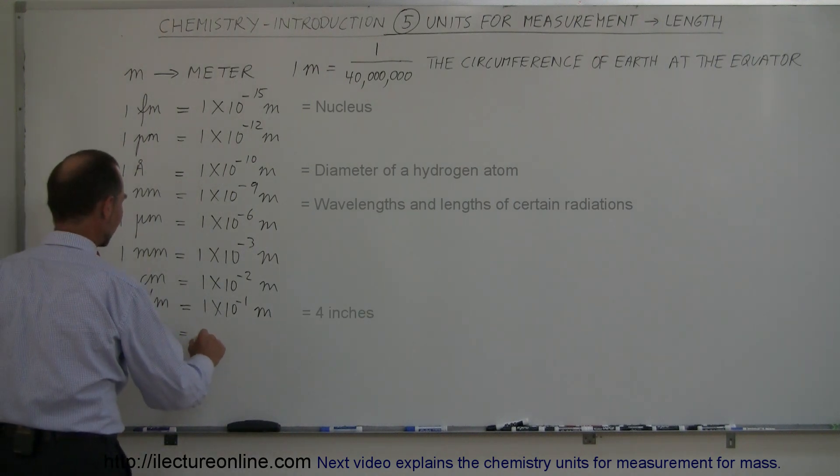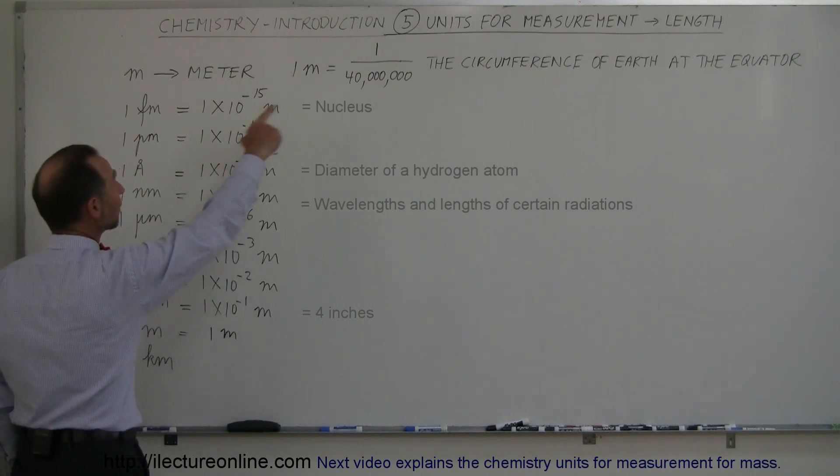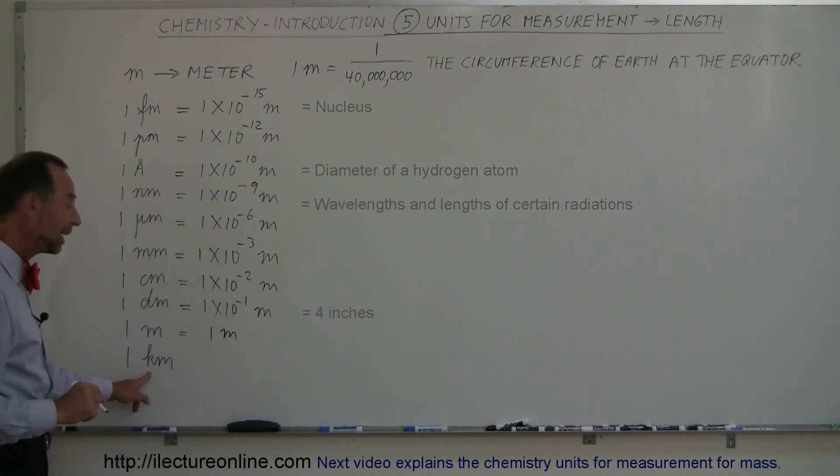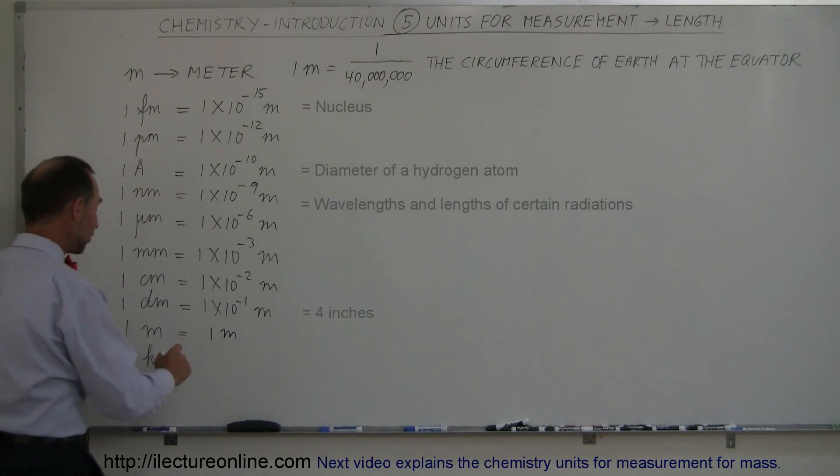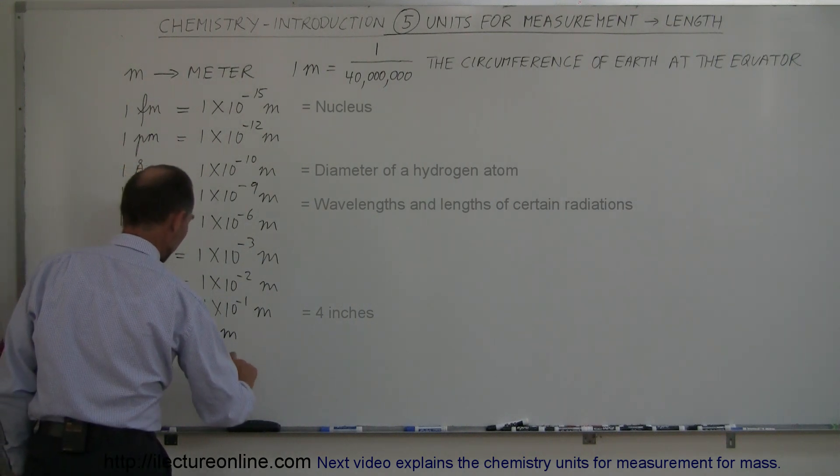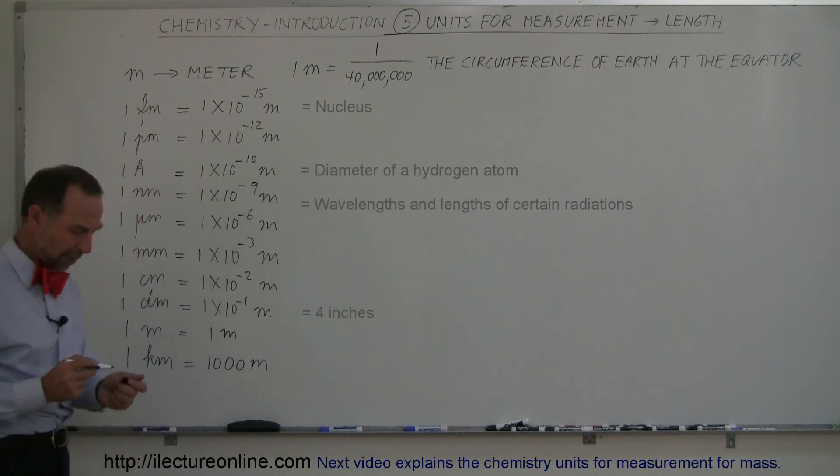One meter we have that defined here. And then 1 kilometer, kilo means 1,000, so 1,000 meters is 1 kilometer. In chemistry, we're not going to use that very much.